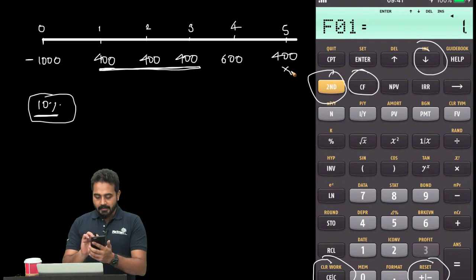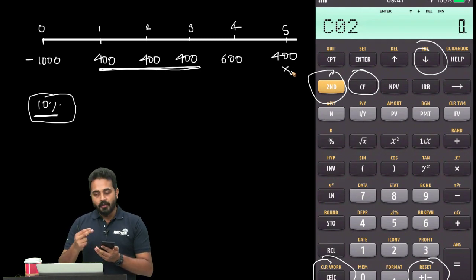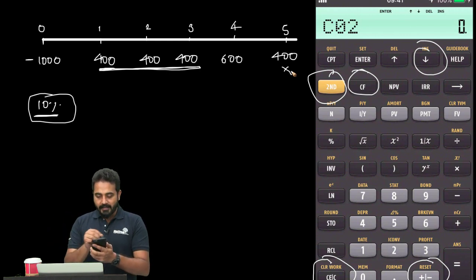I'll enter 3 and press the down arrow. The calculator automatically understood that $400, $400, $400 were the first three payments. So technically CF2 is the fourth cash flow, which is $600. By default, frequency remains 1.